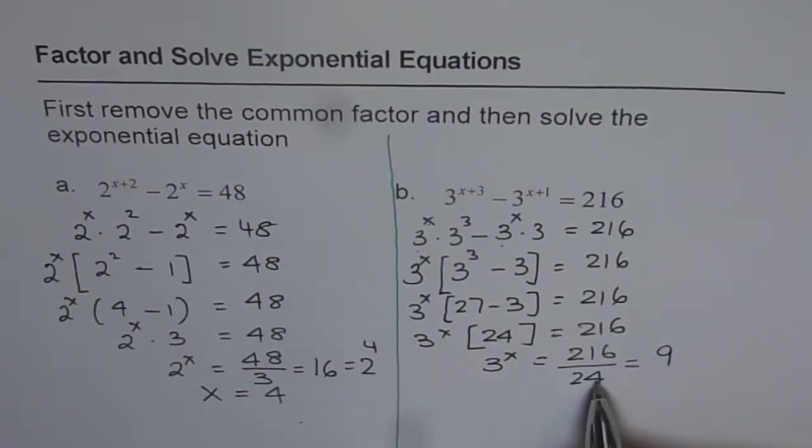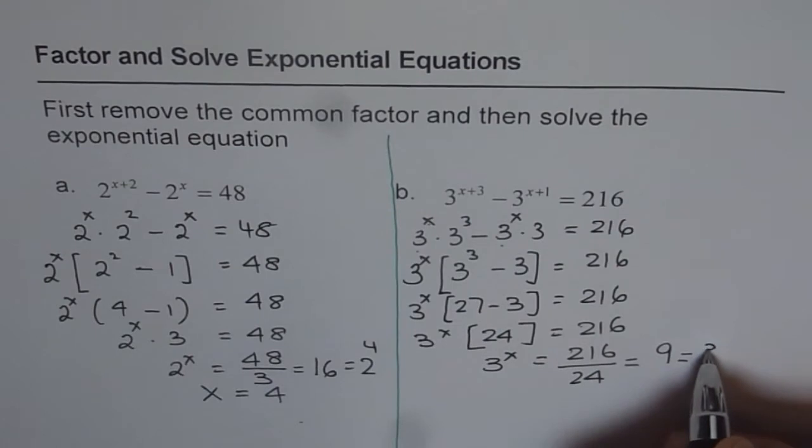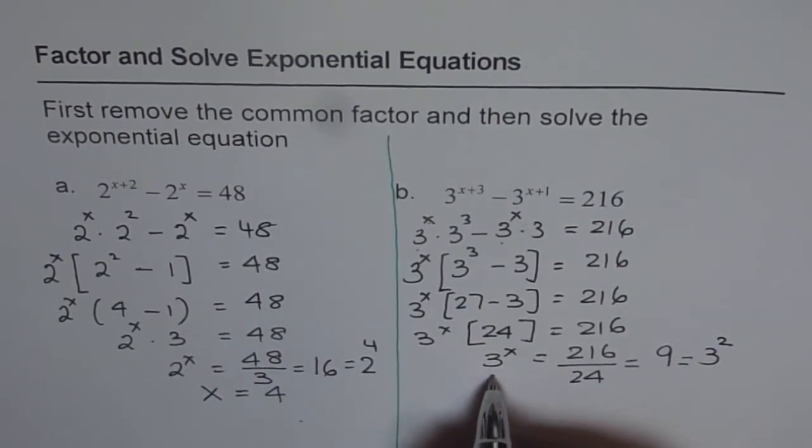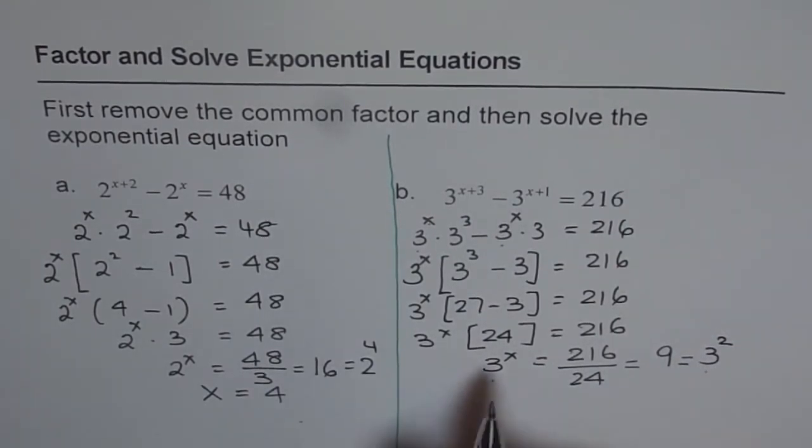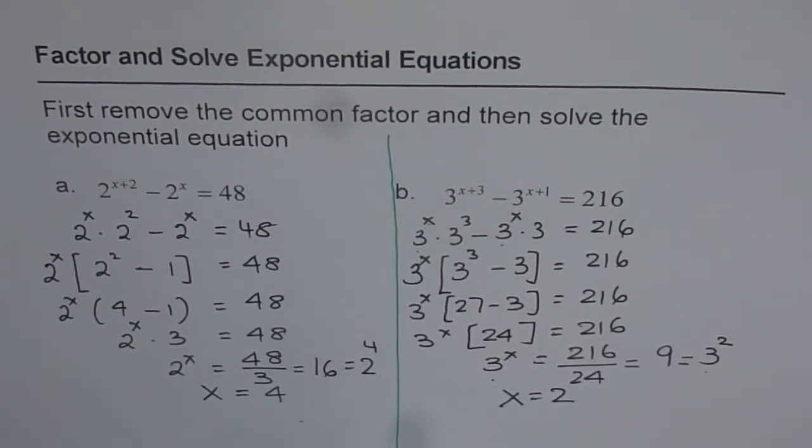9 times 4 is 36, 9 times 2 is 18, and 18 plus 3 is 21. So you get 3 to the power of x equals to 9, and you can write 9 as 3 squared. Now we have common base, 3 and 3. And therefore, we know x is equals to 2 as our solution.